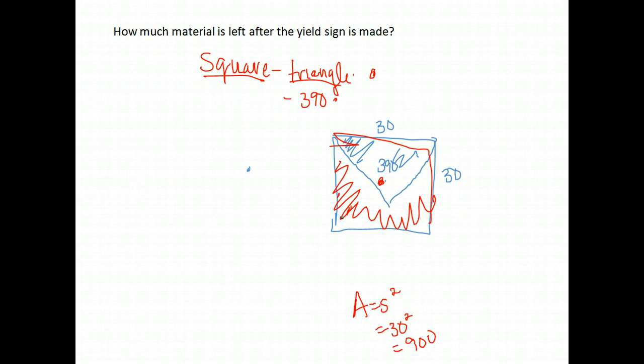We're going to take that up here. The area of our square was 900 square inches. We take out the triangle, subtract the triangle from that, and we'll have our answer. So it looks like they wasted quite a bit of material in this example. They used 390 square inches, and there was 510 square inches left over.